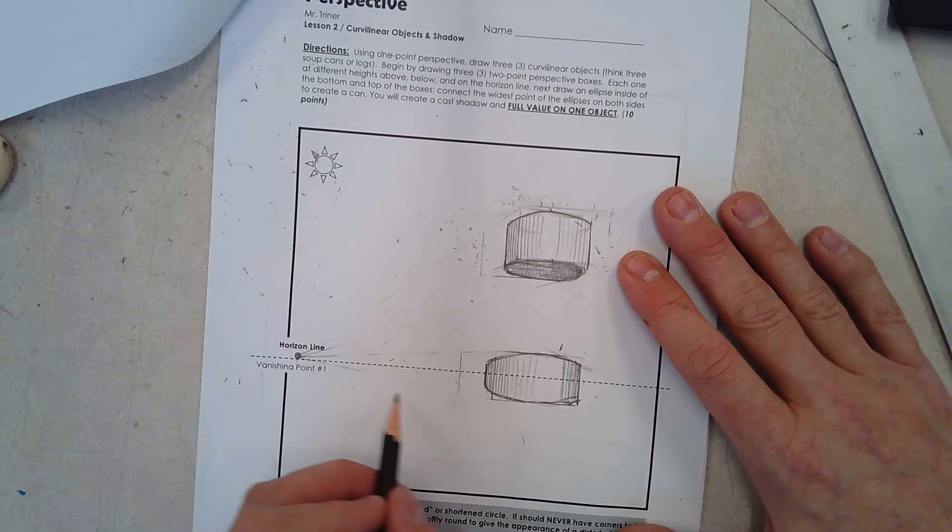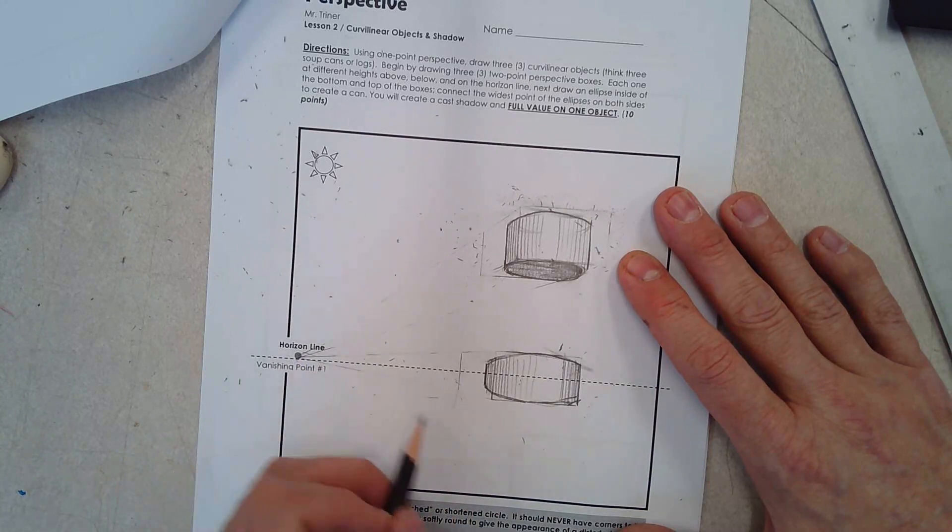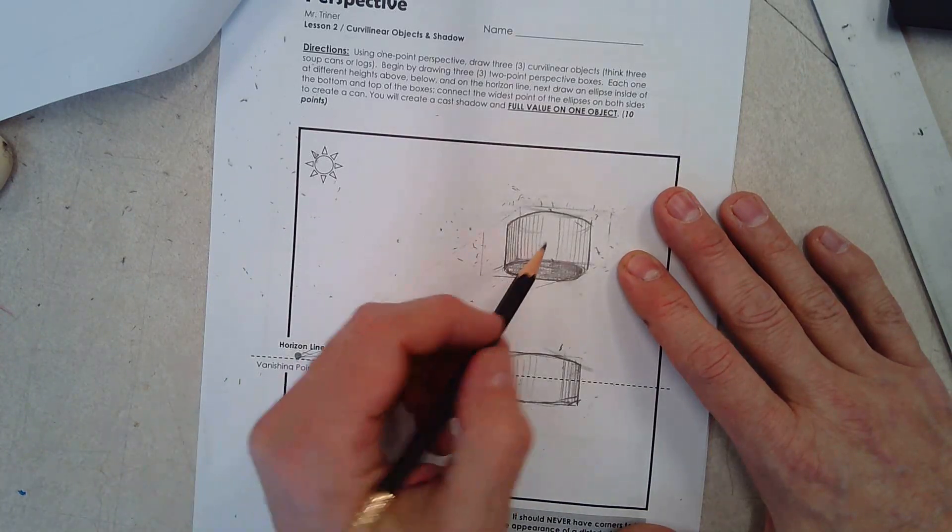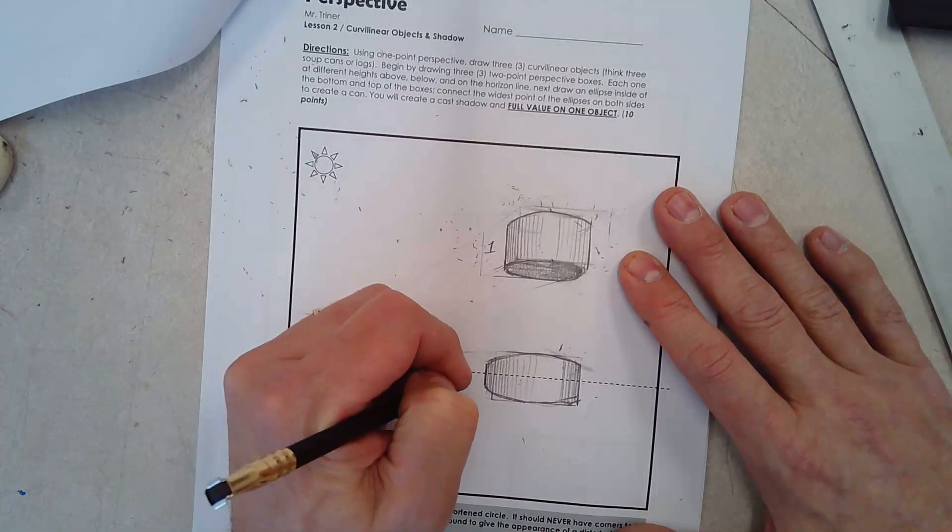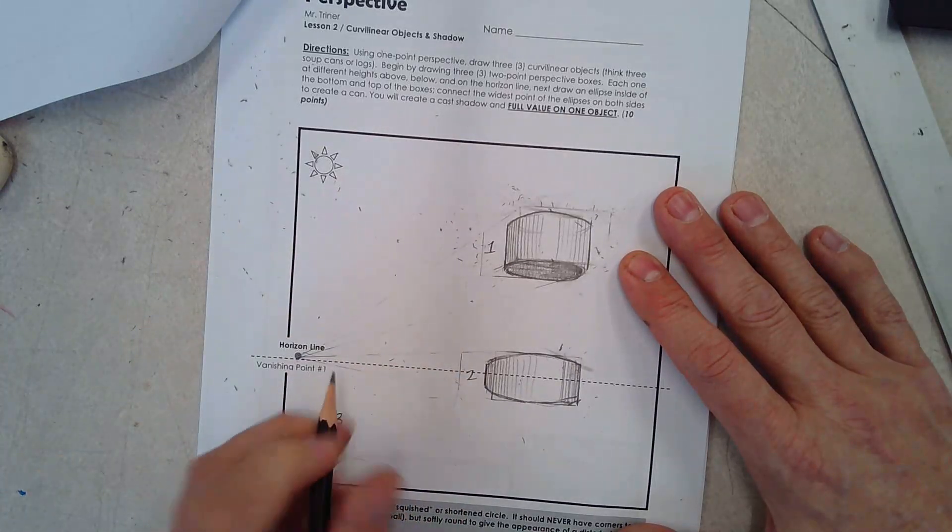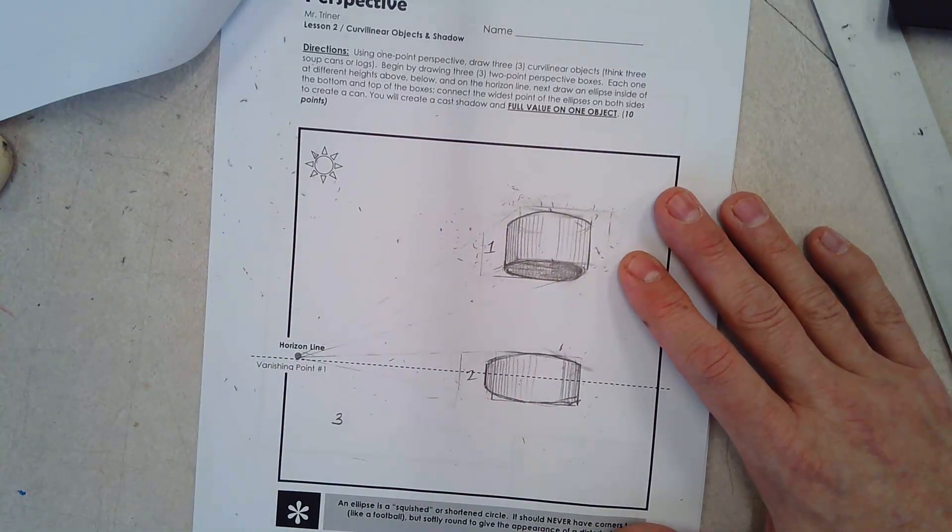So then I'm going to expect from you one more box sitting in correct one-point perspective somewhere here. So you should have a total of three when you're done. I don't care how far apart they are spaced, but they should be at three different levels in this worksheet. Good luck, everybody.